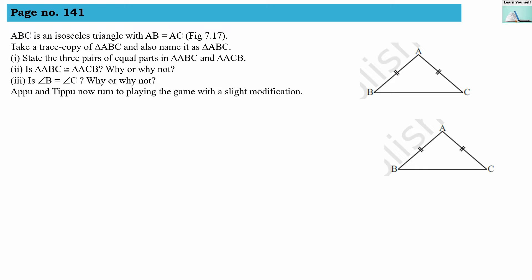This is page number 141. ABC is an isosceles triangle with AB equals AC. Take a trace copy of triangle ABC and name it triangle ABC as well. Tracing means making an exact copy of this triangle. We are then comparing these two triangles. Since the original triangle is isosceles with AB equals AC, these two sides are equal in the trace copy also.